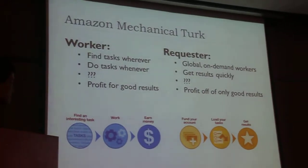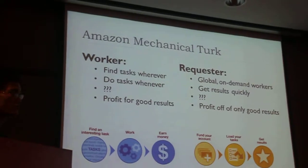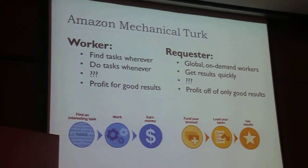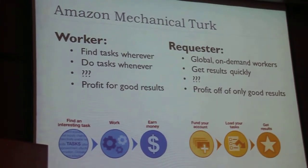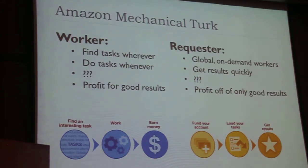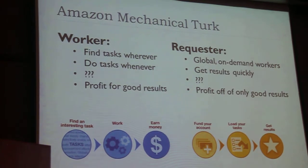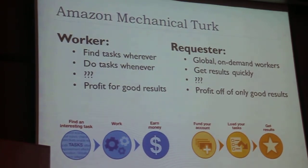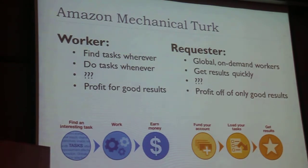Amazon Mechanical Turk lets you post these small tasks. It can be anything from examining text, to counting things, or just going to a website and reading something, putting accounts onto that website. You pay between pennies to, I guess, up to dollars. This way you can get a ton of information in a couple of days — two to three days — and get thousands of results.